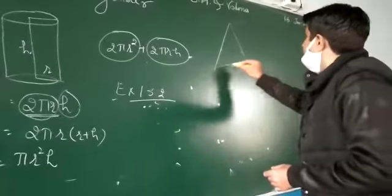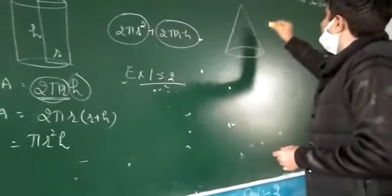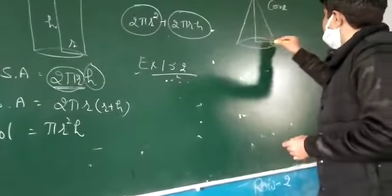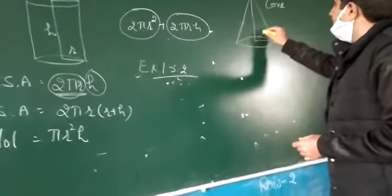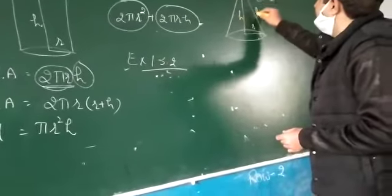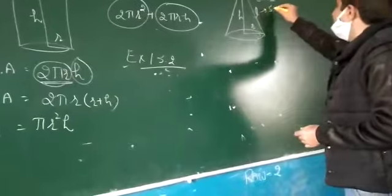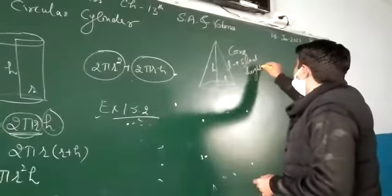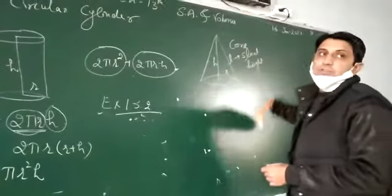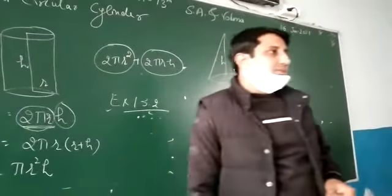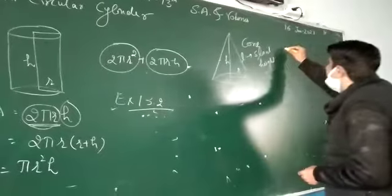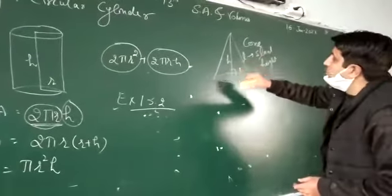Right circular cone. We have a cone. You've seen cones. Dimensions are radius, height, and slant height. This is a new thing. Slant height. This is slant height. Clear?